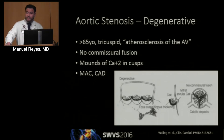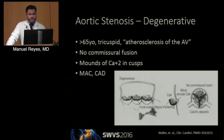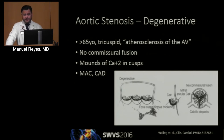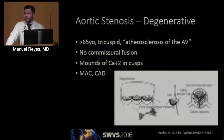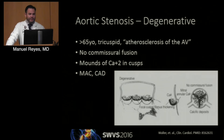Now let's change gears and talk about degenerative aortic stenosis, the kind you generally see in the older population — we call it the atherosclerosis of the aortic valve. Generally it's a tricuspid valve. The big key feature is calcium — calcium is everywhere, in the cusps. You don't generally see commissural fusion. For interventionists and surgeons who do TAVR, you'll recognize these all the time when you're trying to place that pigtail catheter and a big chunk of calcium is prohibiting you from placing it in the right spot.